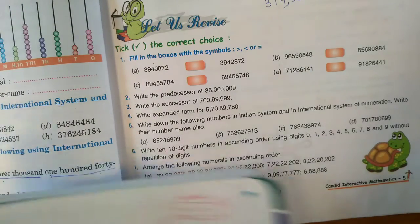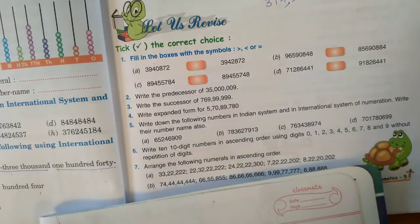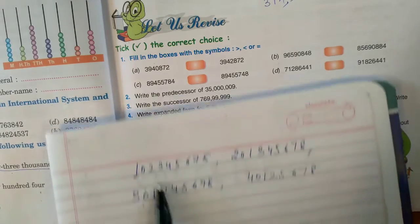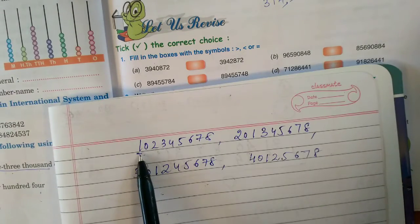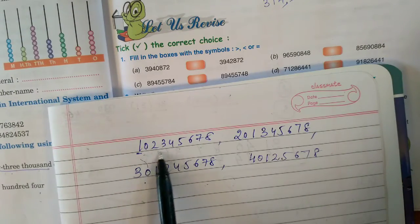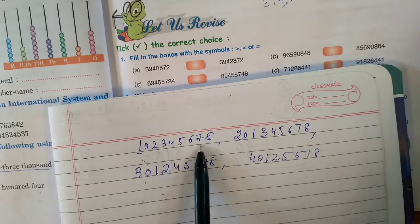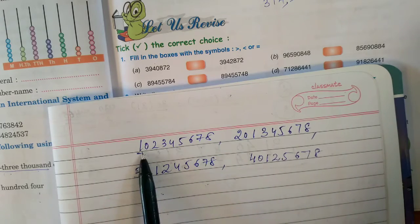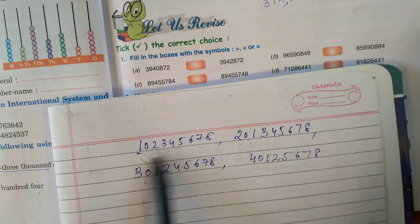Which is the first smallest number we will form? We never start our number with 0, so we will start with 1: 1, 0, 2, 3, 4, 5, 6, 7, 8. After that, instead of 1, write 2.